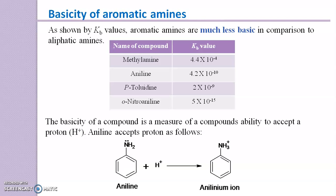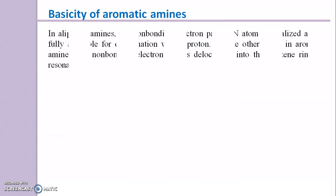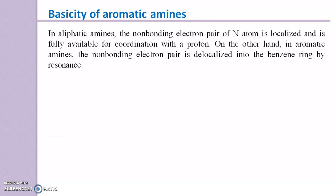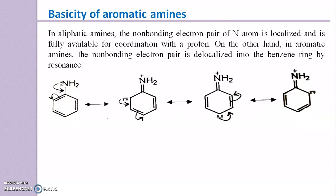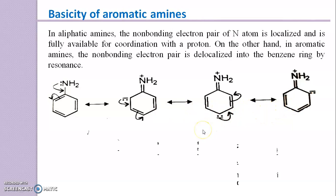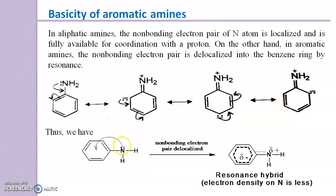Aniline accepts protons and forms an anilinium ion. In aliphatic amines, the non-bonding electron pair of the nitrogen atom is localized and is fully available for coordination with a proton. On the other hand, in aromatic amines, the non-bonding electron pair is delocalized into the benzene ring by resonance. Here is the resonance of aniline, and the resonance hybrid is shown here.